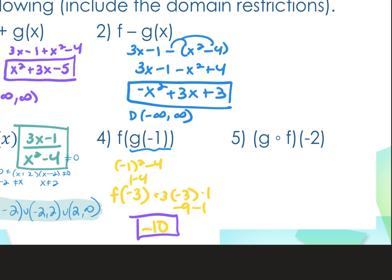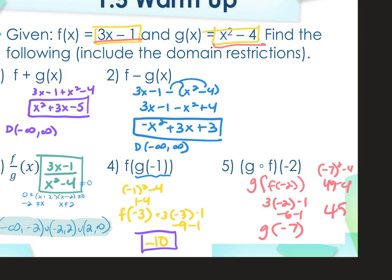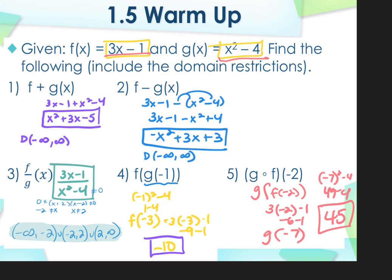And then for 5, now we're plugging in to f first. So the same thing as saying g of f of negative 2. I'm going to plug into f of x first. 3 times negative 2 minus 1, negative 6 minus 1 negative 7. And g of negative 7 means I plug it into the g. So negative 7 squared minus 4, 49 minus 4, which is 45. And again, neither of those had a domain restriction because the one on the right did not carry one down, and we didn't introduce anything new because we even got rid of the variable.